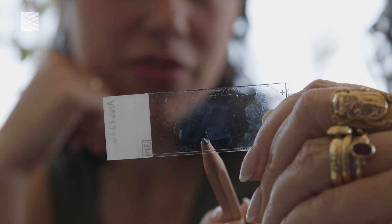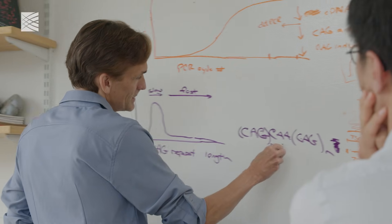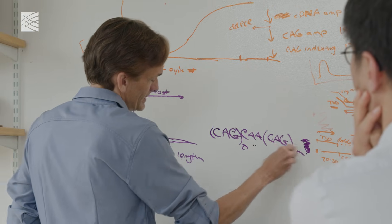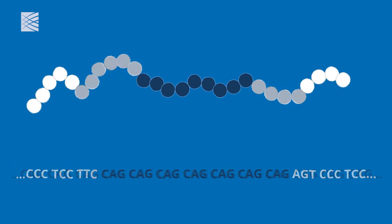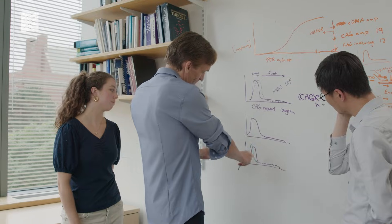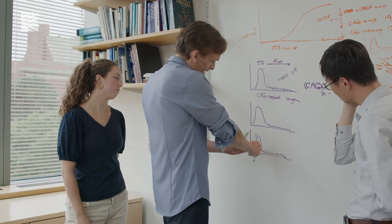The surprising thing that these experiments taught us is that the genetic variation that people inherit isn't actually harmful — it's just that it's unstable. Slowly, throughout the course of a person's life, that genetic variant, that DNA repeat, will get longer and longer, and it's only when it becomes extremely long that it even begins to cause harm. That's a really different way of thinking about how disease arises from genes and genetics.